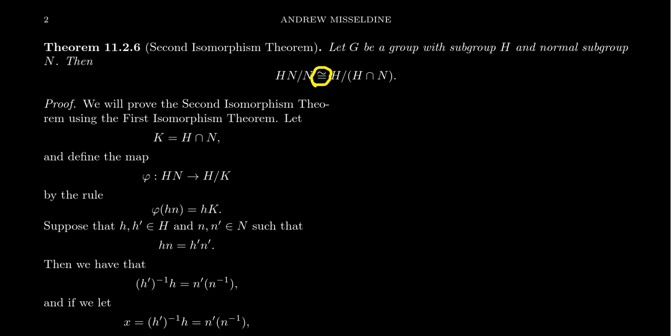The third strategy — and in practice one of the most common — is to use a universal mapping property, such as the first isomorphism theorem, that guarantees the existence of an isomorphism. The key difference is the isomorphism may be implicit rather than explicit. The second isomorphism theorem will be proved using the first isomorphism theorem.